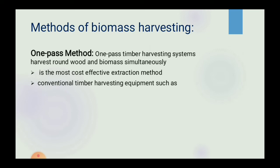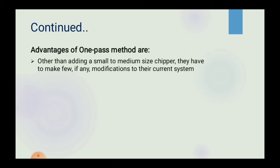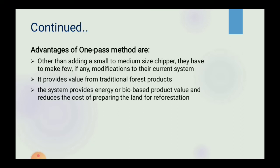Conventional timber harvesting equipment such as feller bunchers, harvesters, skidders and forwarders are used to harvest and recover woody biomass. Advantages of the one-pass method: other than adding a small to medium sized chipper, few if any modifications are needed to the current system. It provides value from traditional forest products, provides energy or bio-based product value, and reduces the cost of preparing the land for reforestation.